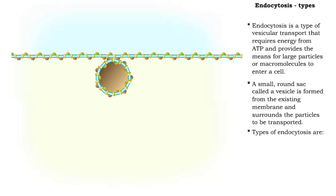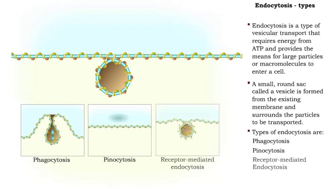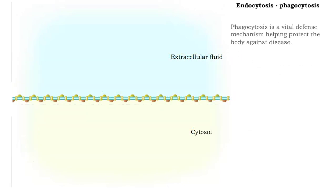Three types of endocytosis are phagocytosis, pinocytosis, and receptor-mediated endocytosis. Phagocytosis is a common form of endocytosis and part of a vital defense system protecting the body from disease.